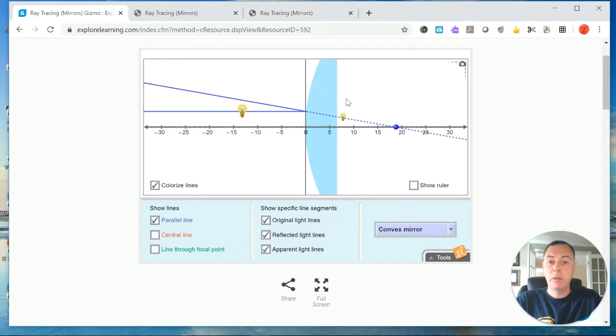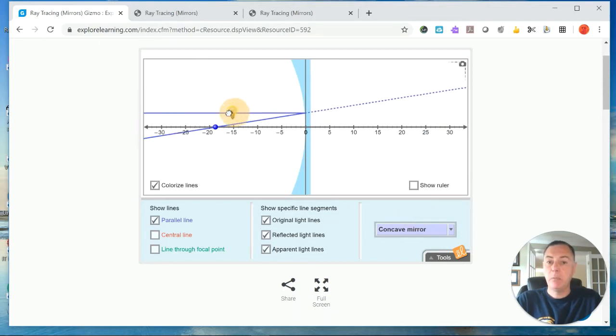This is a convex mirror because the curve goes in this direction—it's curving away from the object. But we can also put a concave mirror over here. Again, for the concave mirror, we can move this back and forth, and you can add these other rays. But just to keep it less cluttered, I'm going to keep them off for the time being. We can also change the focal length.